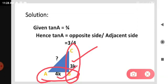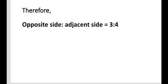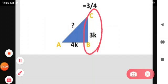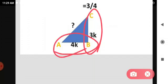Here K is any positive number. Therefore opposite side is to adjacent side equals 3 is to 4. So in this diagram, BC equals 3K and AB equals 4K.